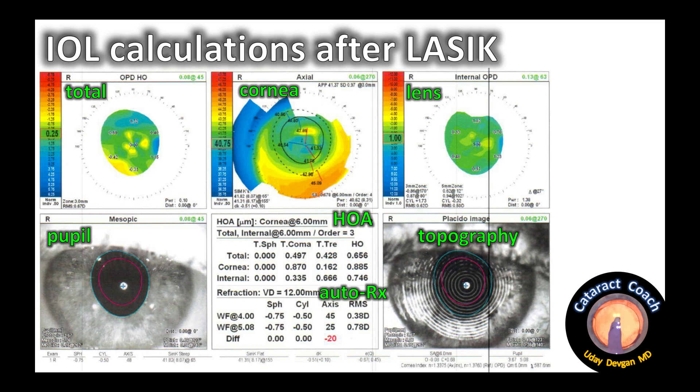It also shows the higher order aberrations (HOAs) at the central 6mm of the cornea. Remember Zernike polynomials: lower order aberrations are sphere and cylinder — what you can fix in a refraction. Higher order aberrations such as spherical aberration are the fourth Zernike polynomial term. The bottom right corner is Placido disc topography — reflection off the surface of the cornea — and that data is used to calculate the topographic map.